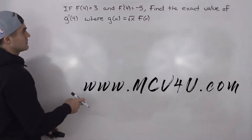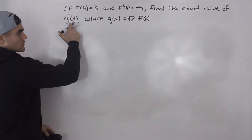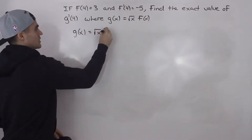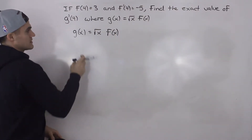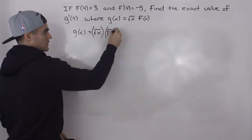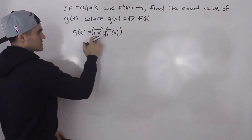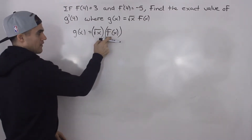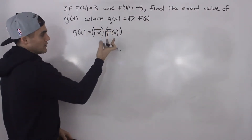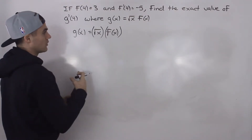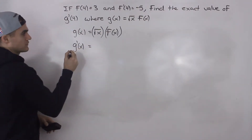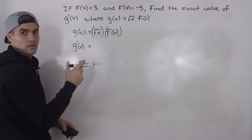So we have to find the value of the derivative of g(x) at an x value of 4. Let's first find an expression for the derivative of this function. Notice that g(x) is the product of two functions: the function root x, and the function f(x). Since we are multiplying two functions, we have to apply the product rule.